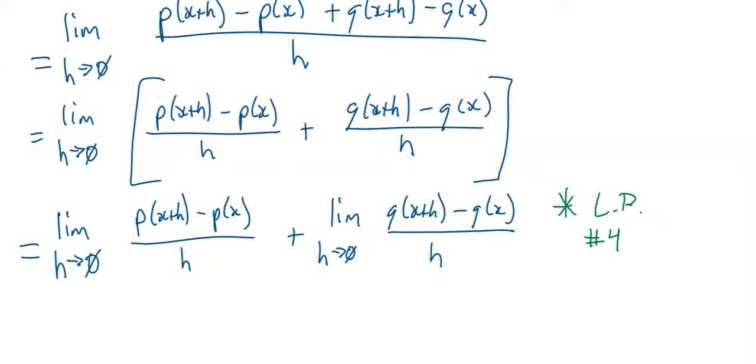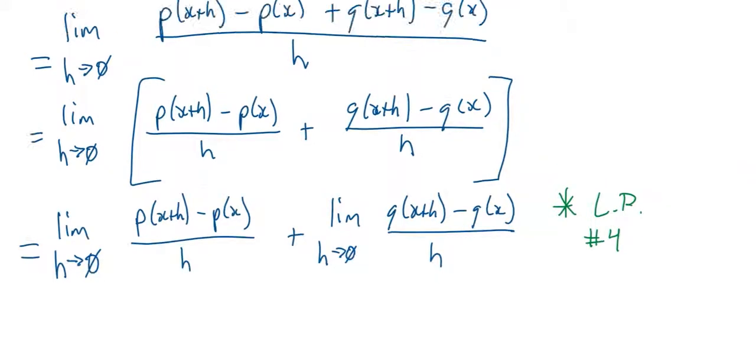We're not quite done, but we're almost done. So what is this? This is the derivative of P. And what is this? This is the derivative of Q. Again, it's very useful to know what the final line should look like. You got to know what the rule is you're trying to prove. That's going to help you make sure you get to the final step.